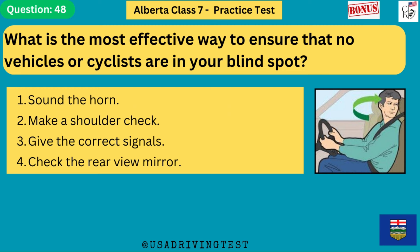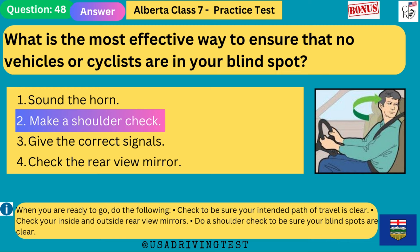What is the most effective way to ensure that no vehicles or cyclists are in your blind spot? 1. Sound the horn. 2. Make a shoulder check. 3. Give the correct signals. 4. Check the rear view mirror. The answer is 2: make a shoulder check. When you are ready to go, check to be sure your intended path of travel is clear, check your inside and outside rear view mirrors, and do a shoulder check to be sure your blind spots are clear.